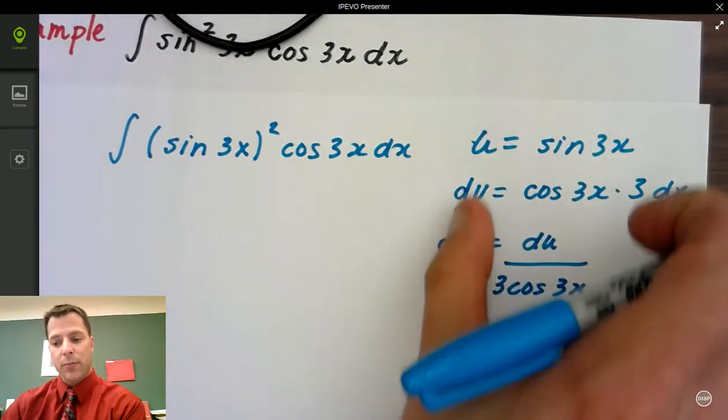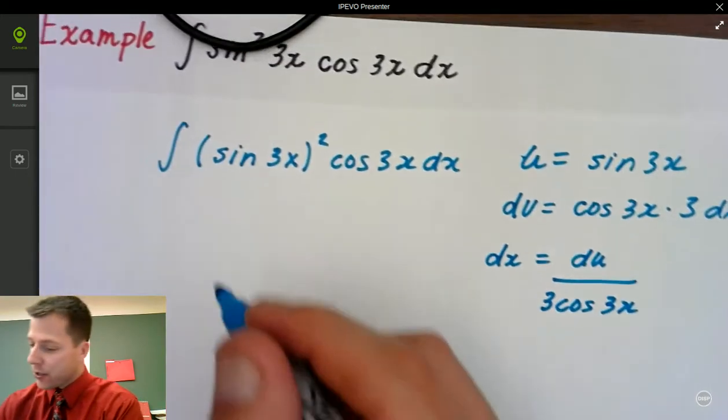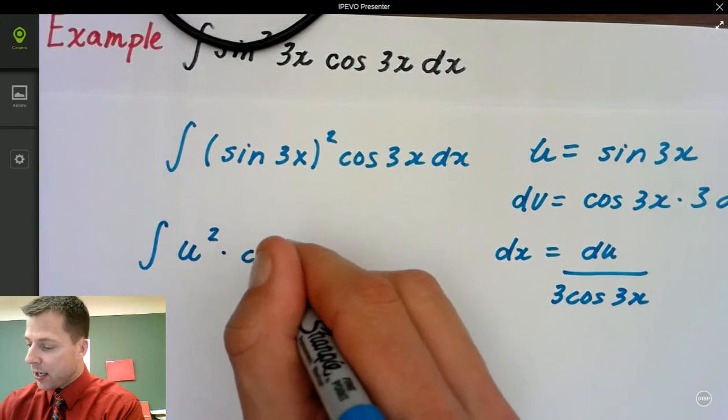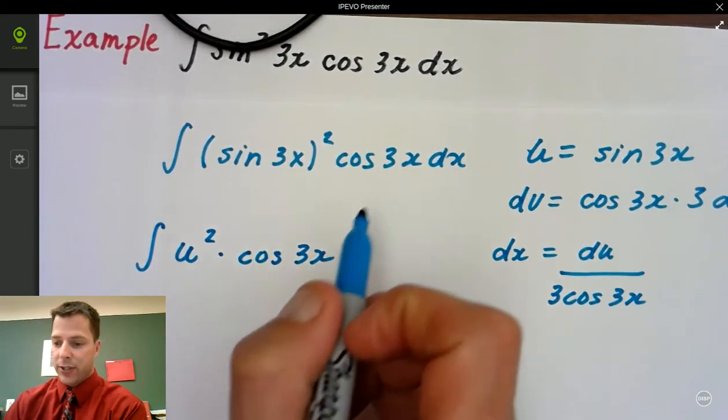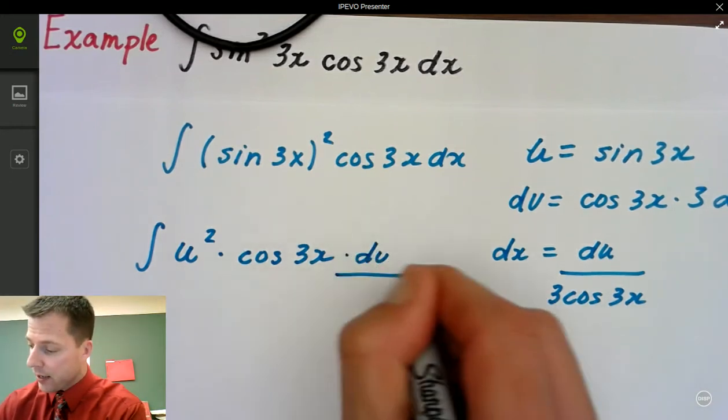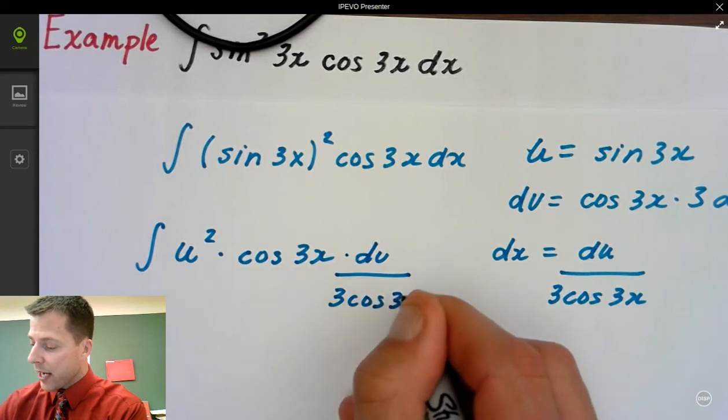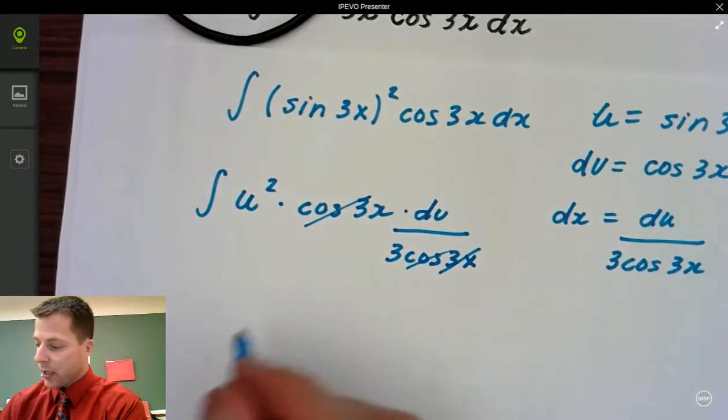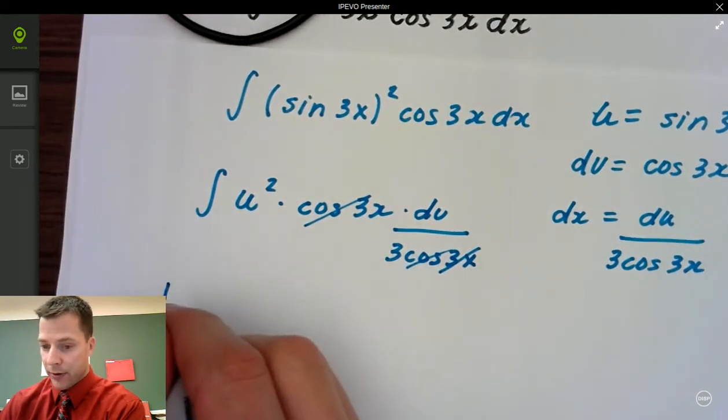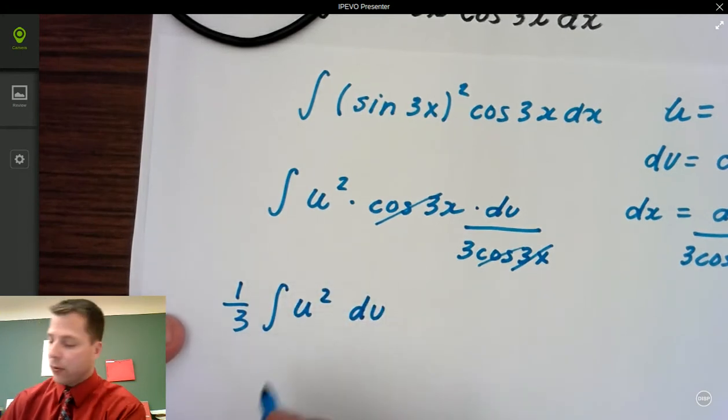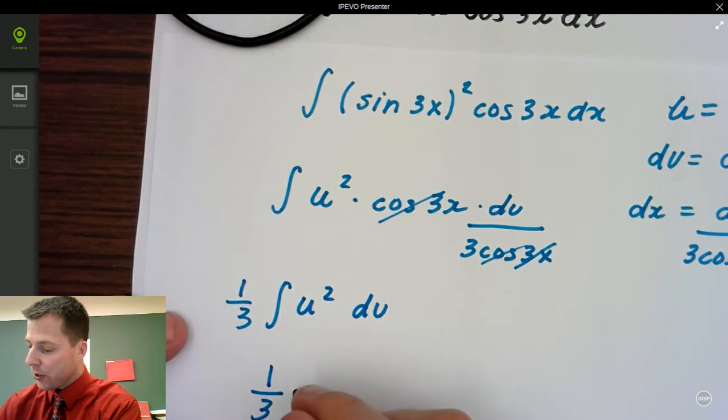All right. Notice how I take care of the u part first, then I go back. So watch. We go back. We know this is u squared times cosine of 3x. Two different variables. We have dx. We know dx in terms of u. That's perfect. So we substitute again. And we get 3 cosine 3x. And look what happens. We get rid of all that. It's gone. So bring out the one-third. Integrating of u squared du. And look. Now it's again a power rule. Nice little power rule here. So u, one-third u cubed over 3 plus c.